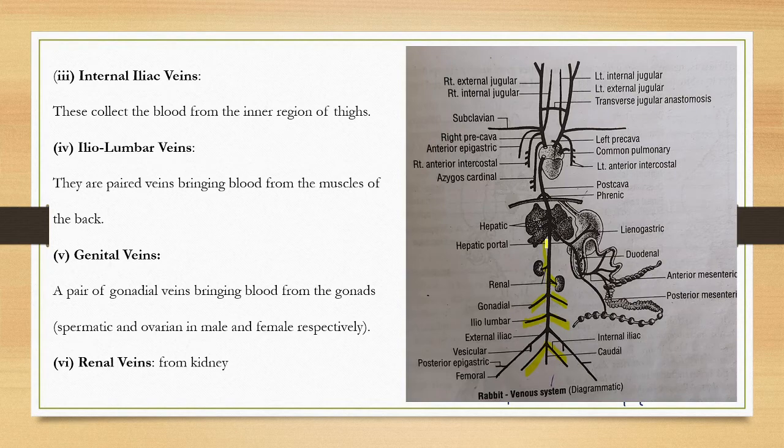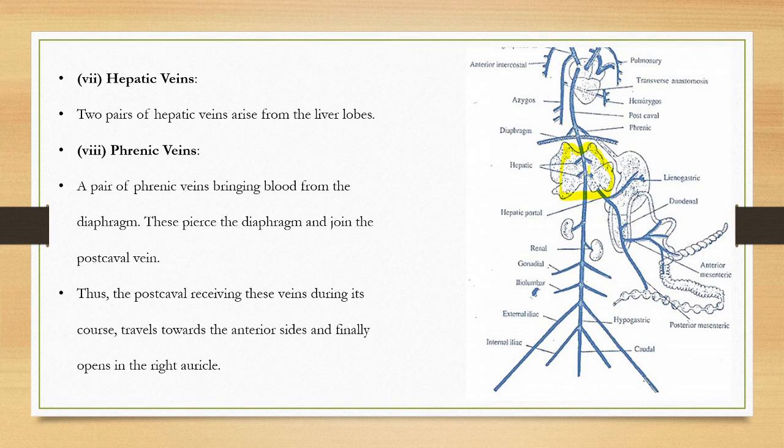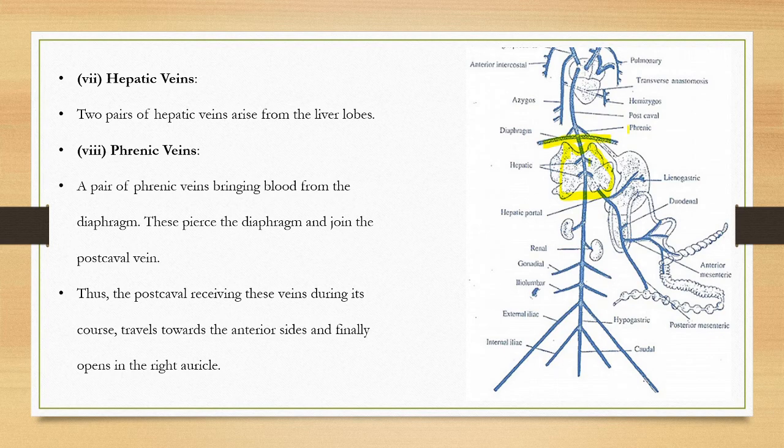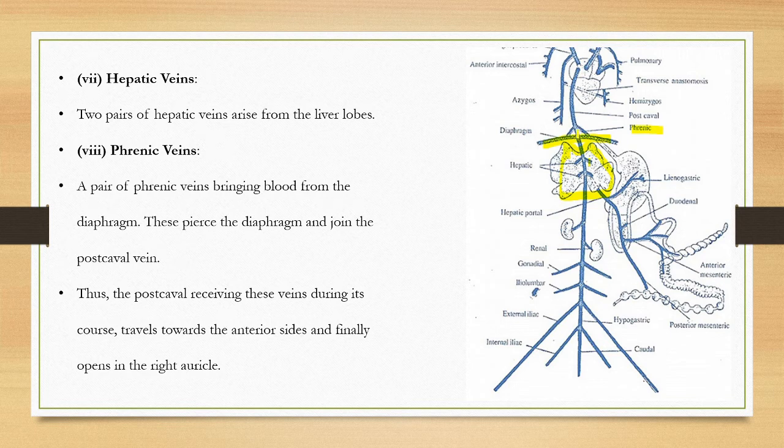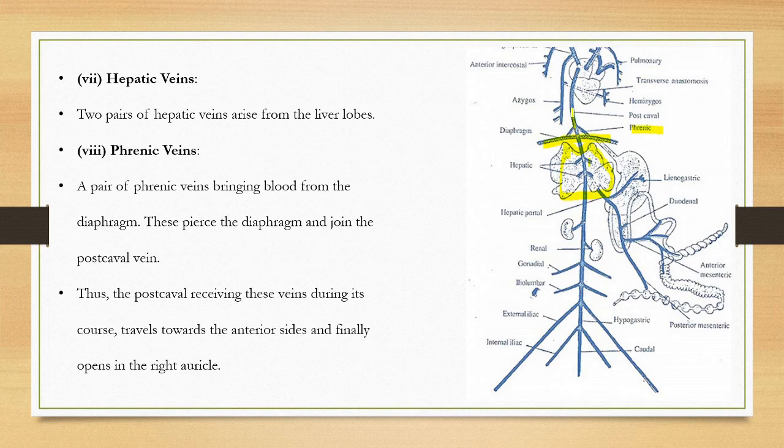This is the liver. Two pairs of hepatic veins arise from the liver lobes and end in the postcava. The phrenic vein originates from the diaphragm and joins the postcaval. The postcaval carries blood and finally opens into the right atrium.